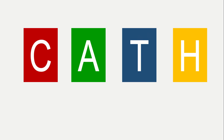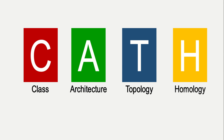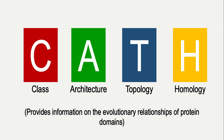Hello everyone. Today I will show you how you can predict domains in your proteins, and by predicting the domain you can also annotate your protein. For this we can use a very important database that is CATH. Here CATH stands for: C for Class, A for Architecture, T for Topology, and H for Homology. By using this database you can predict the domains within your proteins and also predict the function of that particular protein.